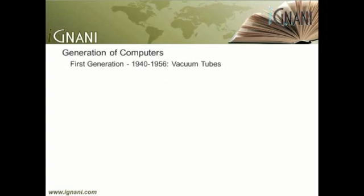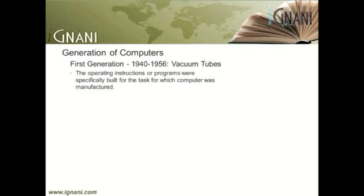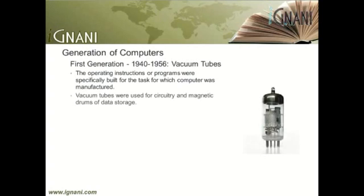First generation: from 1940 to 1956. Technology: vacuum tubes. The computers during the period 1945 to 1956 are regarded as the first generation computers. In first generation computers, the operating instructions or programs were specifically built for the task for which the computer was manufactured. Each computer had a different binary coded program called a machine language that told it how to operate. This made the computer difficult to program and limited its versatility and speed. The first generation computers used vacuum tubes for circuitry and magnetic drums for data storage.